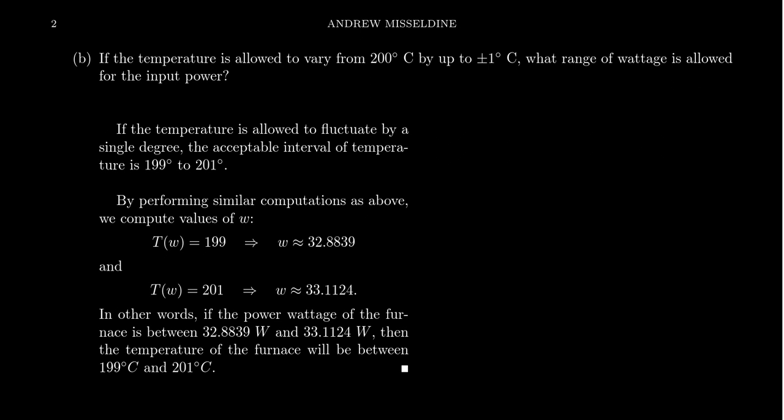Let's say that our researchers have come to the conclusions through their data that plus or minus 1 degree Celsius is an allowable amount of error. As long as it doesn't get above 1 degree or below 1 degree from 200 degrees, then the crystals will grow in an optimal temperature. So if the temperature is allowed to vary from 200 degrees Celsius by up to ±1 degree Celsius, what range of wattage is allowed for the input value? If we go 1 degree above 200, that's 201. If we go 1 degree below 200 degrees, that'll be 199 degrees.